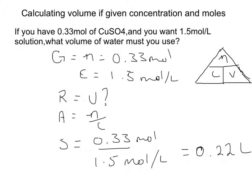So you take what you're given, which is 0.33 mol, and you take 1.5 mol per liter, and you have your triangle.